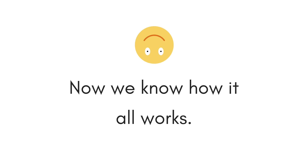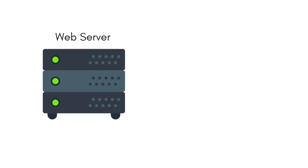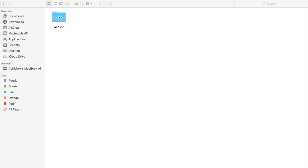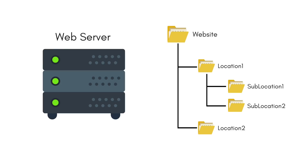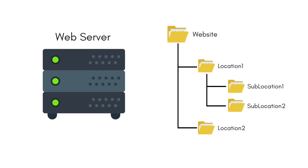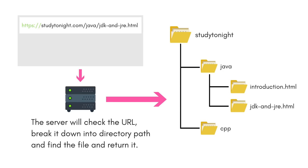This is what conceptually happens behind the scenes when you ask for a website using your web browser. The web server stores all the files related to a website on its hard disk, just like we do on our computers, where we can easily access any folder by navigating to it and seeing the file. In a web server, all this happens using the directory structure. So when you provide a URL, the URL is nothing but the path where the file is located on the web server, and that file is an HTML document. The web server will locate that file and send it back in the form of an HTTP response.